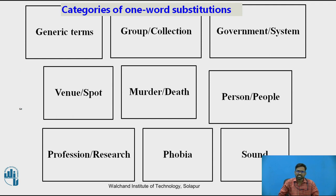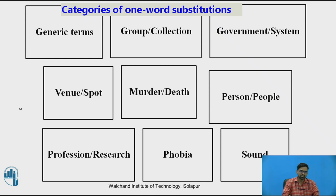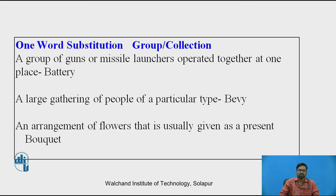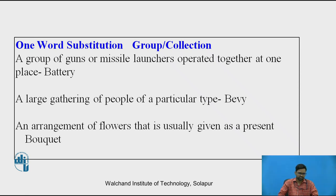There are many categories of one word substitution: generic terms, group of people, collections, government or system, venue, spot, murders, death, person, people, profession, research, phobia, and sound. For example, in the group or collections category: a group of guns or missiles launched together at one place — we say battery. An arrangement of flowers usually given as a present — bouquet.